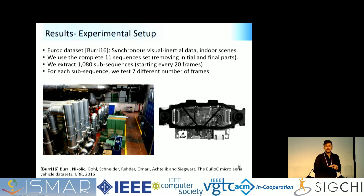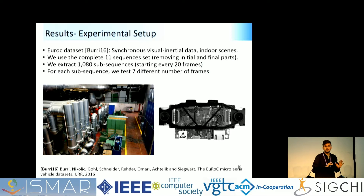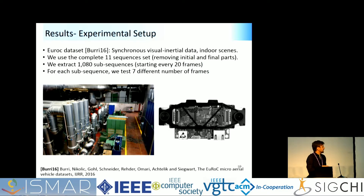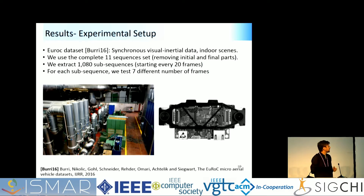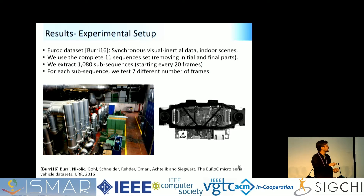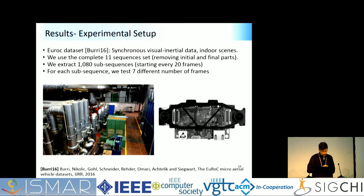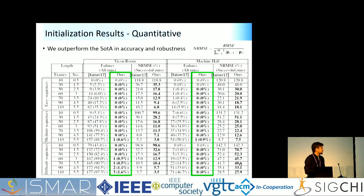For evaluation, we used the EUROC dataset because it is public, allowing others to compare against our algorithm. It contains 11 sequences of a quadrotor flying in two rooms, with visual and inertial data. We took all sequences, extracted several subsequences every 20 frames, and for each subsequence tested a different number of frames for initialization — resulting in a large-scale evaluation.